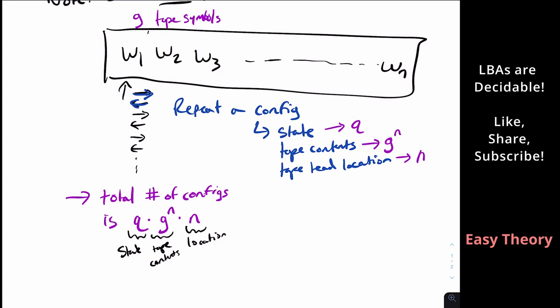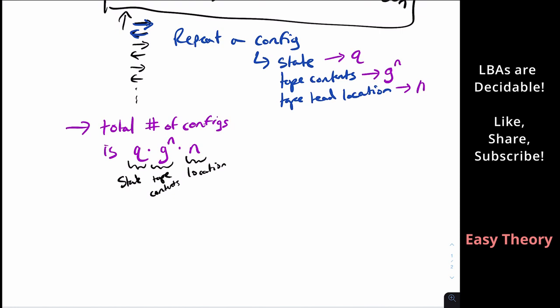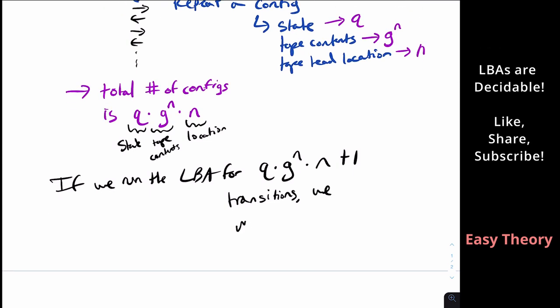Okay, so that's the number of possible configurations. But if we run this for one more step, so if we run the LBA for one more step than this, so one more transition, so that number plus one transitions, then what must happen? Well, there are only that many configurations, and we just ran for one more transition. So that means that we must have repeated a configuration.